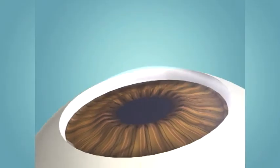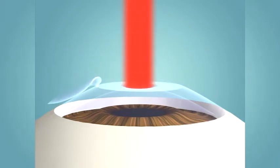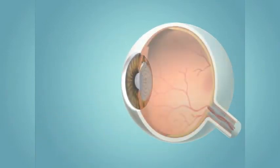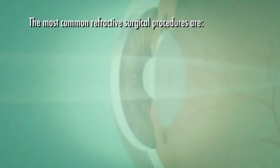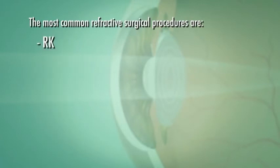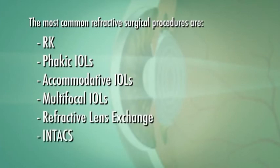Over the past decades, a variety of surgical procedures, collectively known as refractive surgery, has become an increasingly popular method of correcting refractive errors. In most cases, these procedures permanently alter the shape of the cornea so that light rays are refocused on the retina to improve vision. The most common refractive surgical procedures are LASIK, EpiLASIK, PRK, CK, AK, RK, Phakic IOLs, Accommodative IOLs, Multifocal IOLs, Refractive Lens Exchange, and Intacs. Each of these procedures offers a different technique for refocusing light more accurately on the retina.